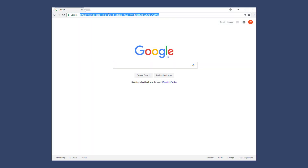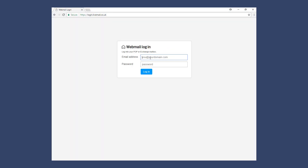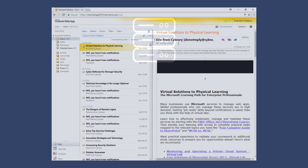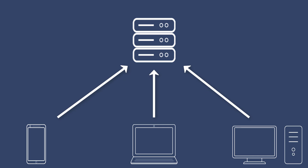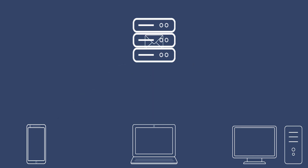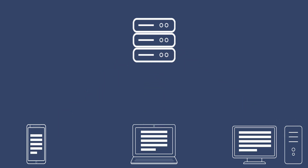You can either do this by connecting via web browser, so going to a URL and entering your email address and password, or if you've got a mobile device or a laptop or a computer, you can use a mail client on there to download the mail to your device and read it on there. If you're connecting to your mailbox using a web browser, you don't really need to worry about POP and IMAP because you're connecting directly to the server and therefore not downloading any mail at all. But if you're downloading mail using a mail client, then you need to know the differences between POP and IMAP.